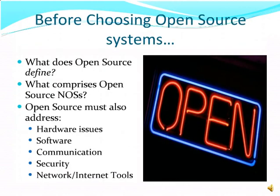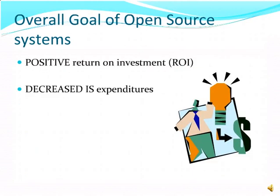What does open source define? What comprises open source network operating systems? Open source must also address hardware issues, software, communication, security, and network and internet tools. The overall goal of implementing an open source system is a positive return on investment and decreased information systems expenditures.